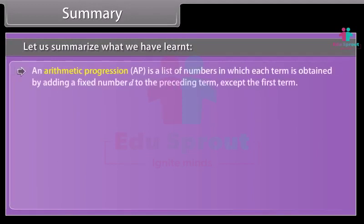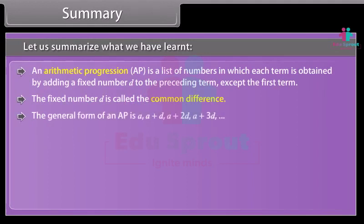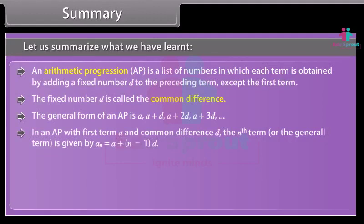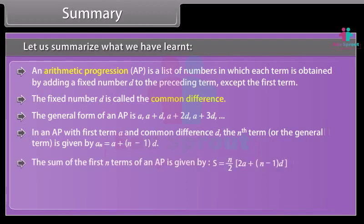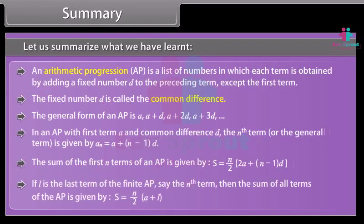Summary. An arithmetic progression (AP) is a list of numbers in which each term is obtained by adding a fixed number D to the preceding term except the first term. The fixed number D is called the common difference. The general form of an AP is A, A plus D, A plus 2D, A plus 3D and so on. In an AP with first term A and common difference D, the nth term or general term is given by AN equal to A plus (N minus 1) into D. The sum of the first N terms is given by S equal to N upon 2 into (2A plus (N minus 1) into D). If L is the last term of the finite AP, the sum of all terms is given by S equal to N upon 2 into (A plus L).